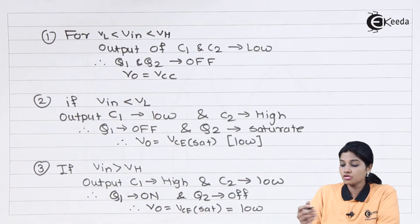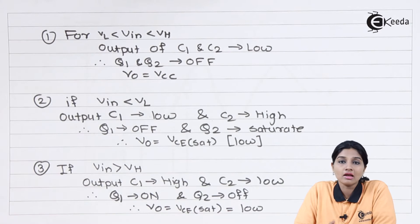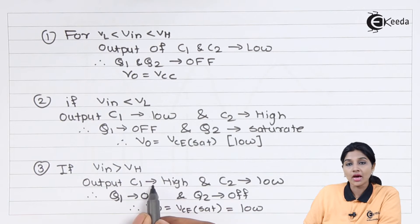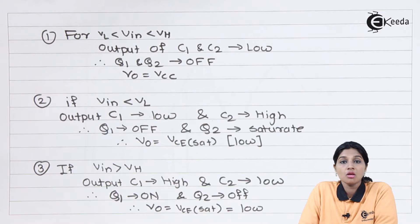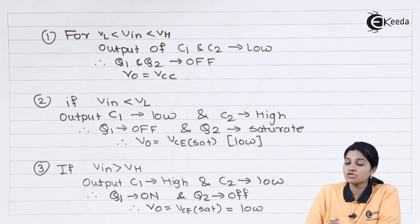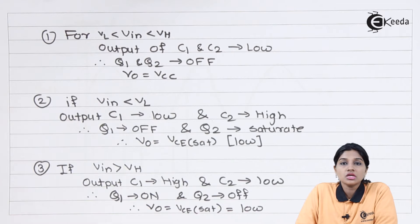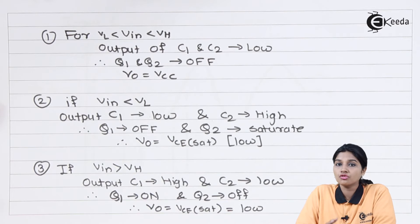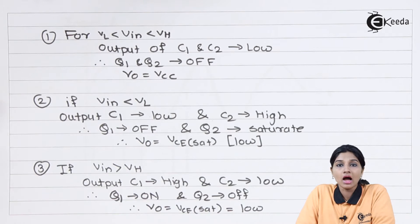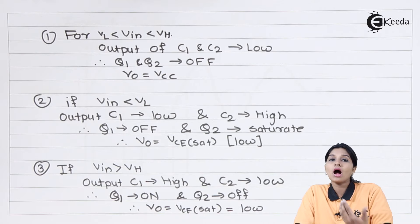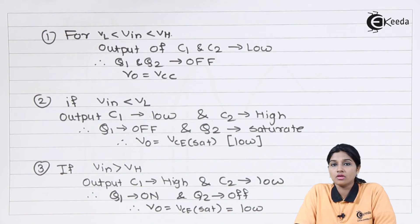In the third case, when the input voltage is greater than VH — the higher level of the window — the output of comparator 1 becomes high and comparator 2 becomes low. Because of this, transistor Q1 gets saturated and turns on, whereas transistor Q2 turns off. Since the output is taken commonly from the collectors of both transistors, the final output VO equals VCE_sat, which is low. So from these three conditions, the output is high only when the input is between VH and VL; if the input goes above VH or below VL, the output becomes low.